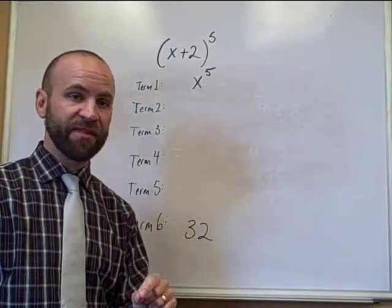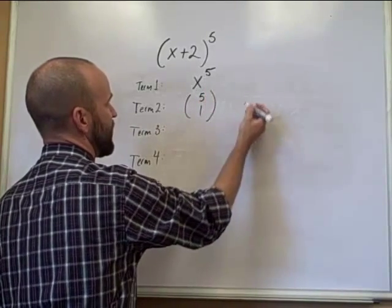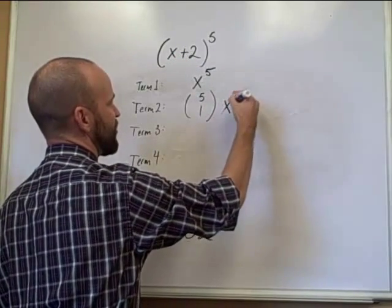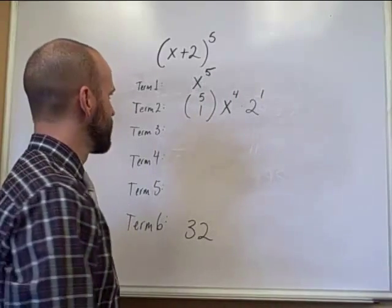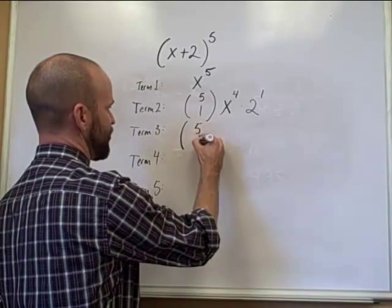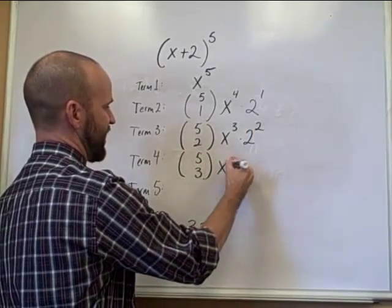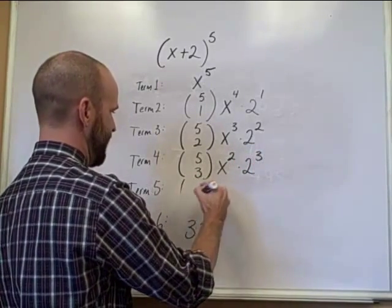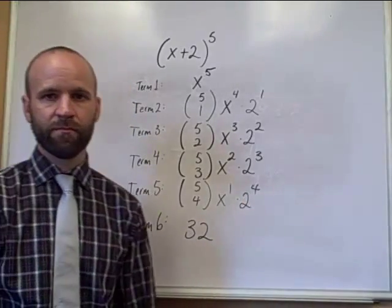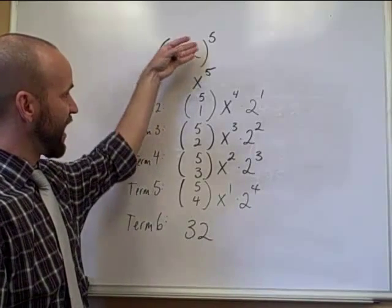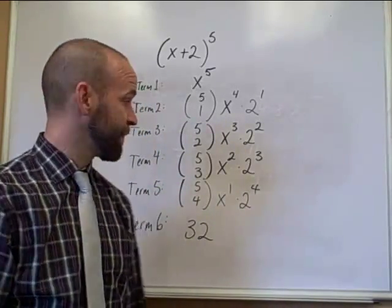Using the binomial theorem, the second term has coefficient 5 choose 1, times x to the fourth power, times 2 to the first power. The next term is 5 choose 2 times x to the third power times 2 to the second power. The fourth term is 5 choose 3 times x to the second power times 2 to the third power. The powers on top always give 5, and once we reach k equals 5 that's the last term, which we already know.